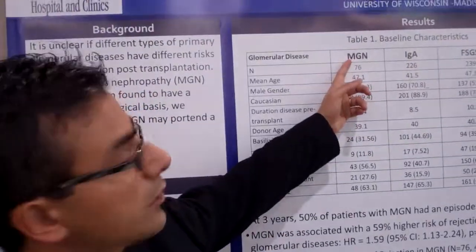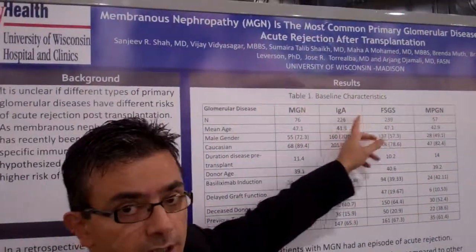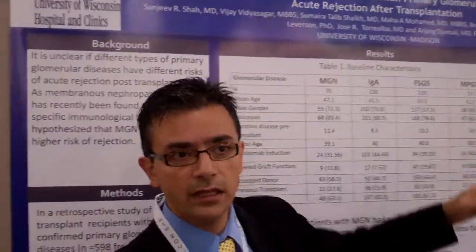We are interested in determining the risk factors associated with acute rejection in patients with primary glomerular diseases after transplantation. All patients needed to have biopsy-proven disease recurrence. We examined the four most common types of glomerular diseases: membranous glomerulonephritis, IgA nephropathy, FSGS, and MPGN.